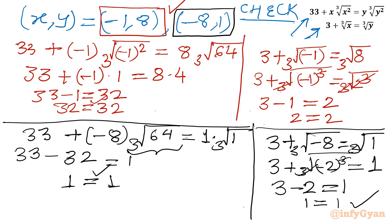The final solution is (x, y) equals (negative 1, 8) and (negative 8, 1). This brings the end of this video. Thank you so much for watching. Do not forget to like, share, and subscribe. Bye bye and good luck, take care of yourself.